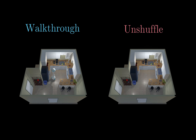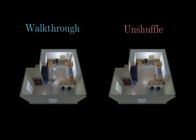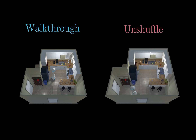During the unshuffle phase, we start by temporarily removing the agent. We then change the state of between one and five objects — for instance, the cabinet may close and the bread may change in position and rotation. The agent is then placed back at its same starting position, and its goal is to interact with the environment such that it undoes the changes just made.